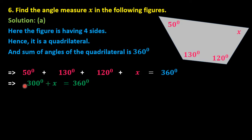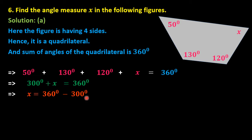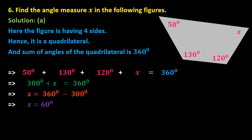Shifting 300 degrees to the right gives x equals 360 minus 300 degrees. After subtraction, the value of x is 60 degrees. This is the answer for question number 6a.